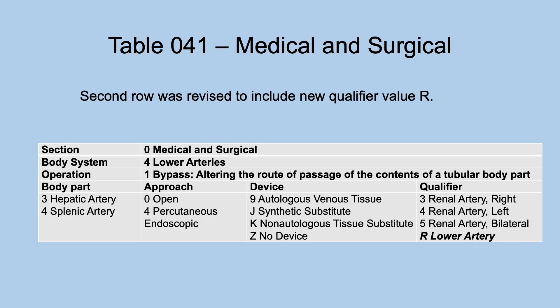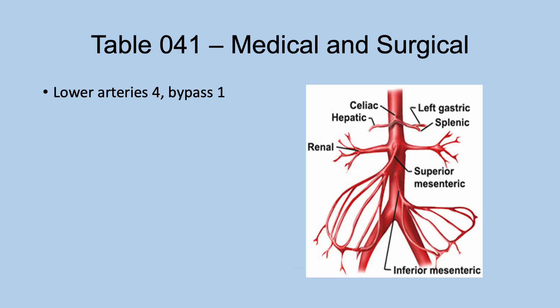Let's start with the medical and surgical section 0, bypass procedure, body system lower arteries — table 041. The second row was revised to include a new qualifier: lower artery. This is lower arteries bypass. Before, all you had was renal arteries. Now you have a qualifier value for lower arteries — arteries below the renal artery.